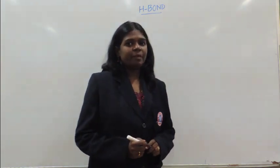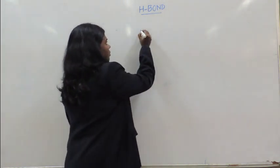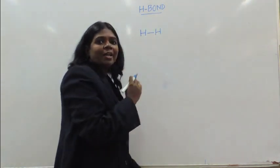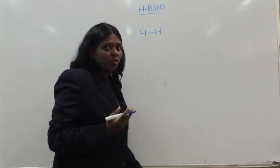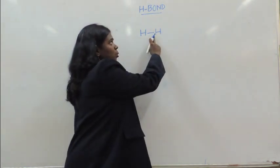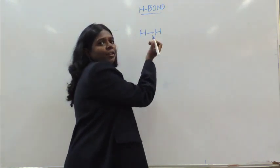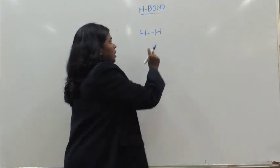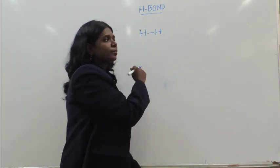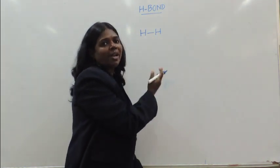We will take a very simple example. Let's take the hydrogen molecule. The hydrogen molecule, as you already know, is formed by a covalent bond — formed by sharing of a pair of electrons between two hydrogen atoms. Because this is a covalent bond molecule, the two electrons are shared equally by the two atoms.